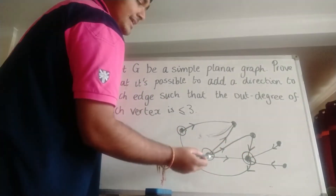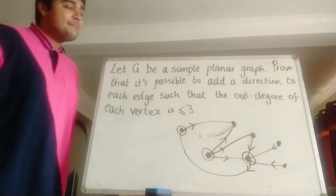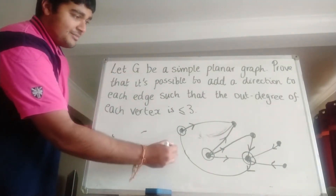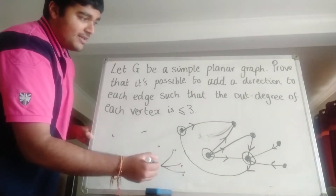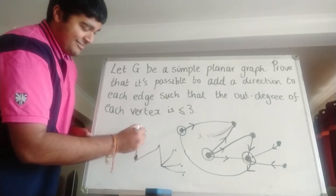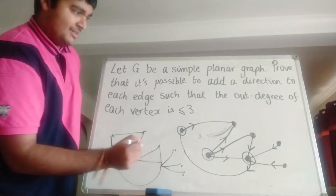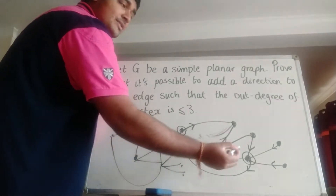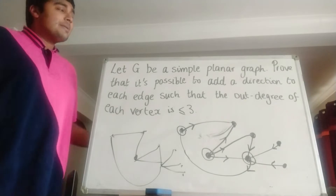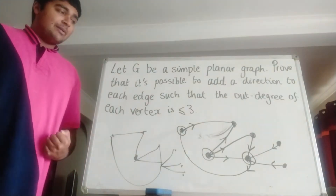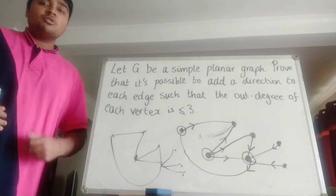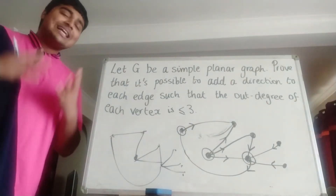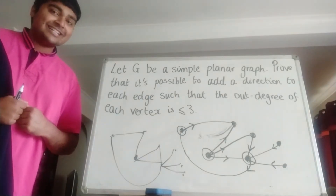The out-degree of this vertex here is just 1 coming out. So if we were originally given this graph, we could add on the directions like this and get a valid solution to this problem. The in-degree of this vertex here — the number of edges coming into it — is 4, but that's fine. We don't care about the in-degree; it's simply the out-degree we care about. Given any simple planar graph, we want to show that it's possible to add directions to each edge so the out-degree of each vertex is at most 3.